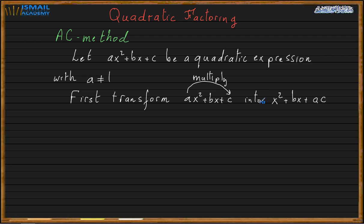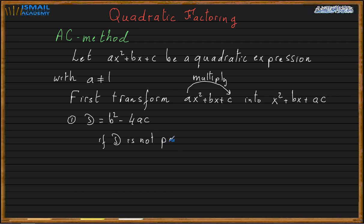Now we use the concept of direct factoring. First, we find the discriminant: b squared minus 4AC. If the discriminant is a perfect square, you can go ahead and factor. If it is not a perfect square, you cannot factor. If D is not a perfect square, you cannot use the AC method.